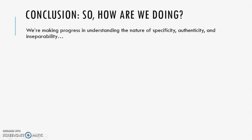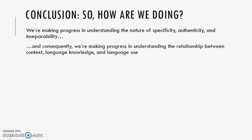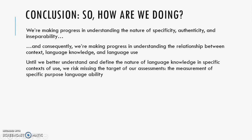In conclusion, we have to ask: how are we doing? We are making progress in understanding the nature of specificity, authenticity, and inseparability, and consequently making progress in understanding the relationship between context, language knowledge, and language use. Until we better understand and define the nature of language knowledge in specific contexts of use, we risk missing the target of our assessments — the measurement of specific purpose language ability.